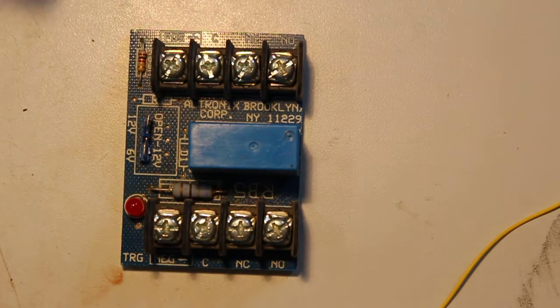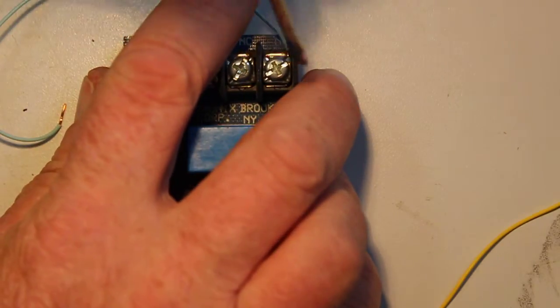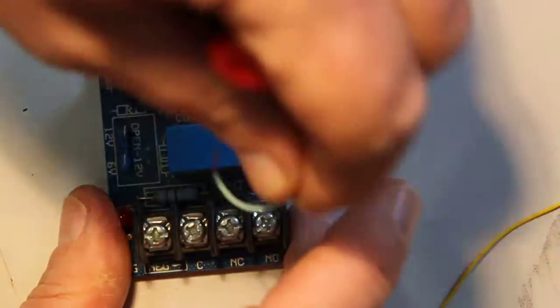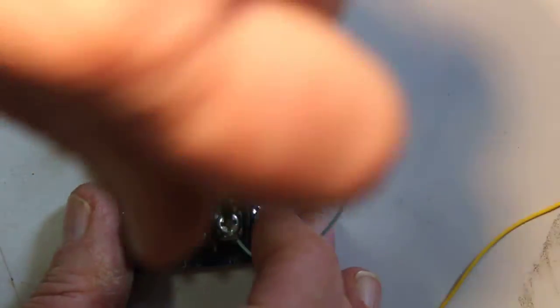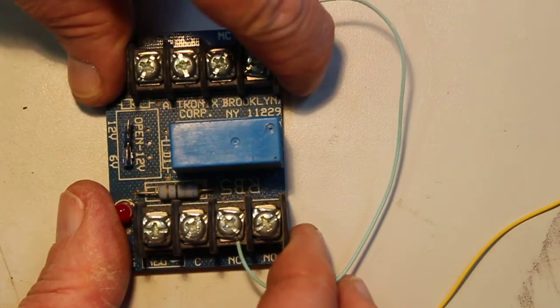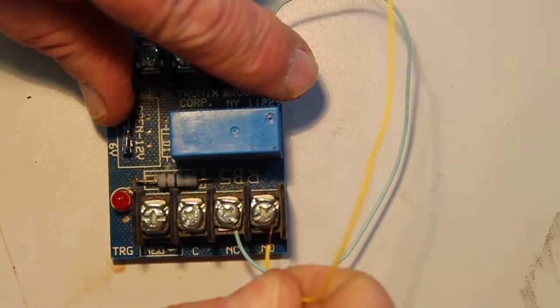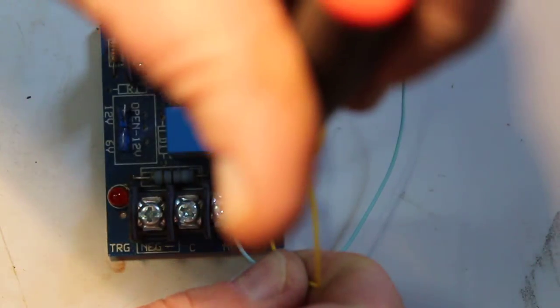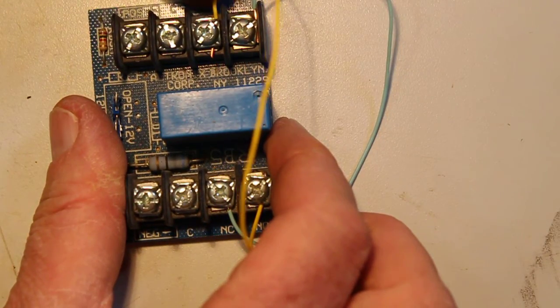So the first thing I'm going to do is go from normally open over to the normally closed. I just jumped from normally open to normally closed. Now I'm going to jump back from this side, from the normally open to normally closed.